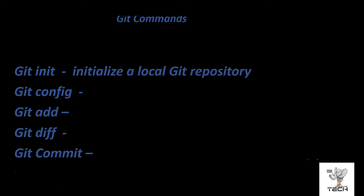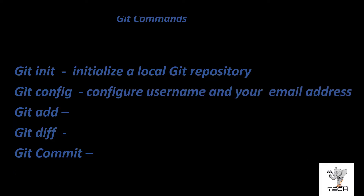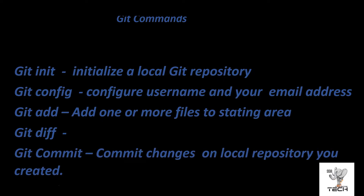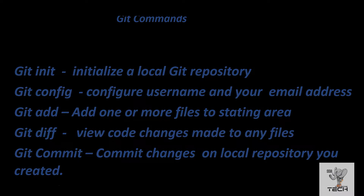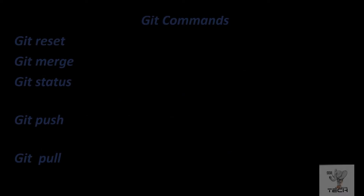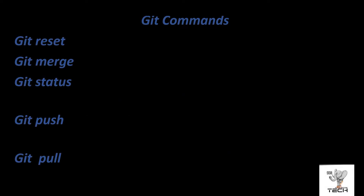Init will initialize a local repository. Config will configure your username and email. Add will add files to your staging area. And then at that point, you would do a commit if you love those changes. You can view code changes made to your file by using diff. I don't plan on you memorizing this, but I just want to throw some of these commands out so you're familiar with them.